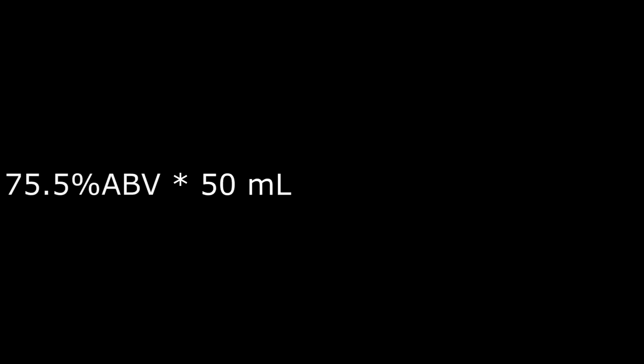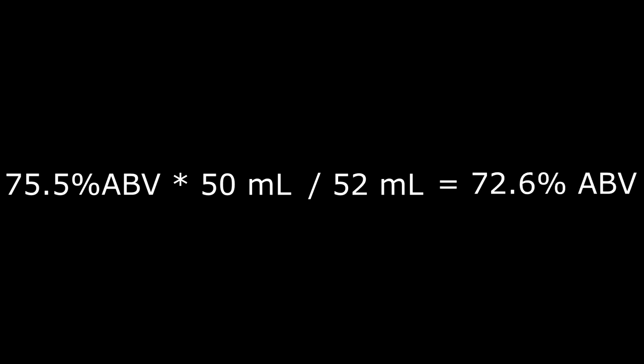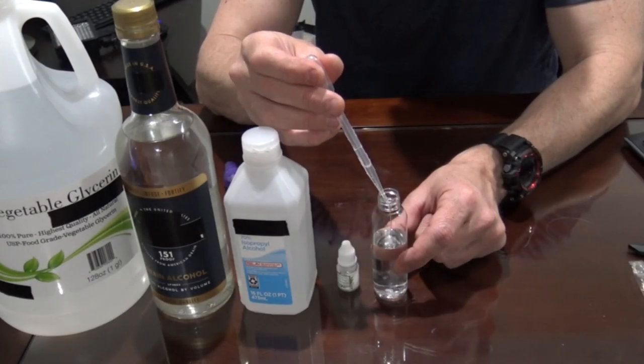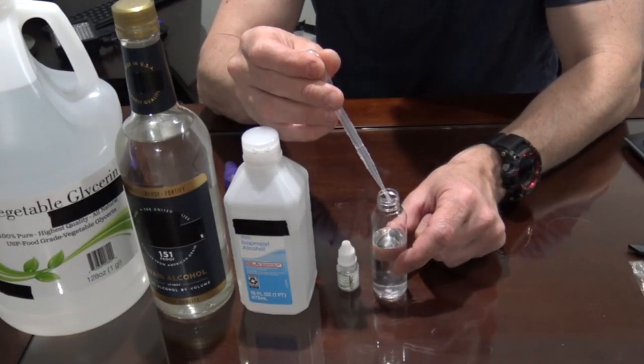The first reason is that I did the math and calculated that when 50 milliliters of 75.5% alcohol solution is diluted to 52 milliliters, its alcohol concentration only drops to 72.6%. So in my opinion, adding the glycerin didn't cause a problem — but it did serve a very important purpose.